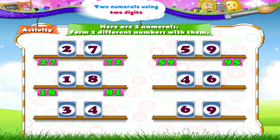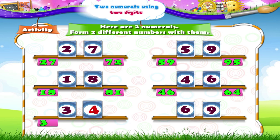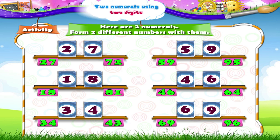Four and six: the numbers are forty-six and sixty-four. Three and four: the numbers are thirty-four and forty-three. And finally, six and nine: the numbers are sixty-nine and ninety-six.